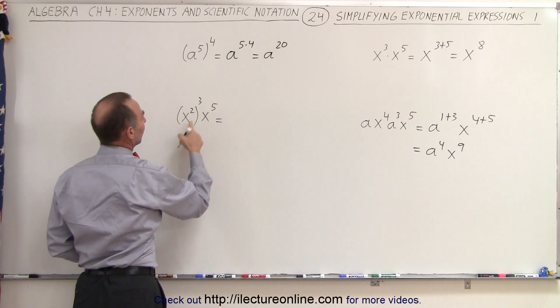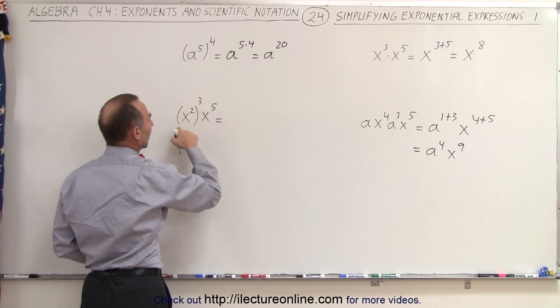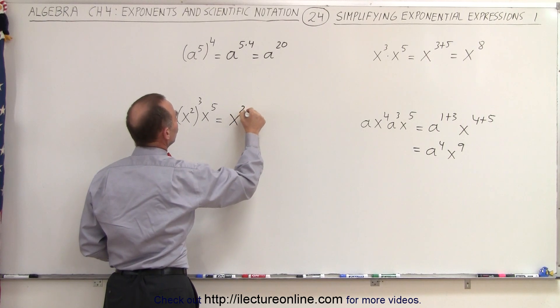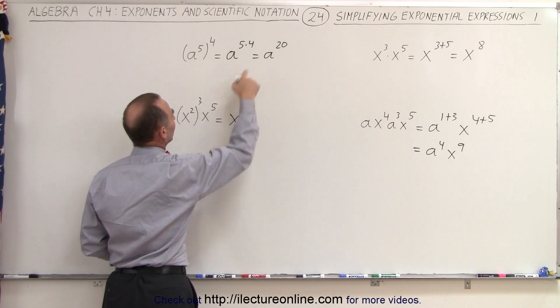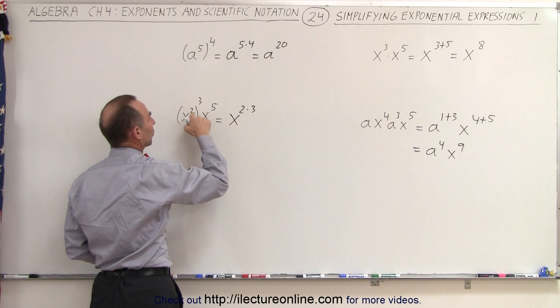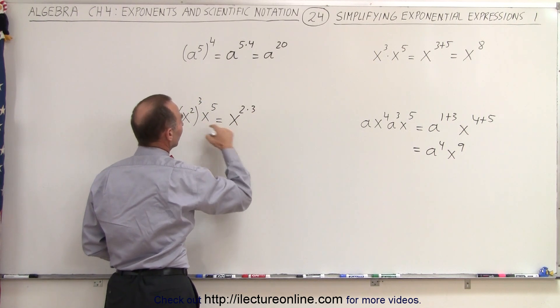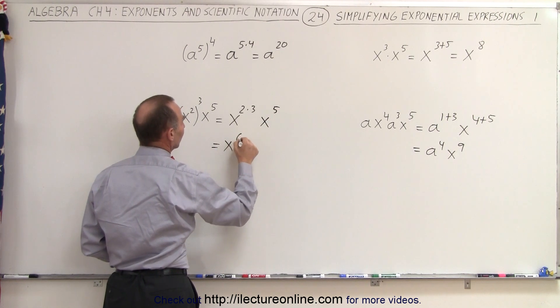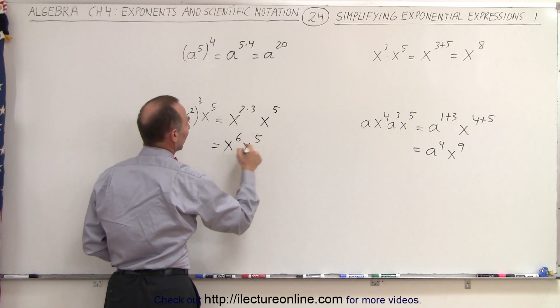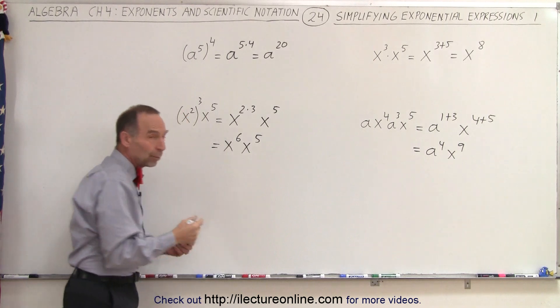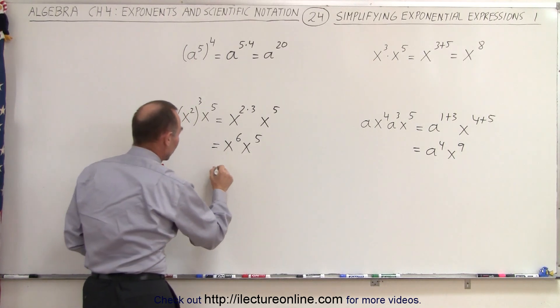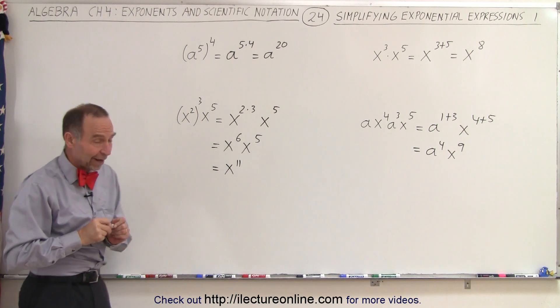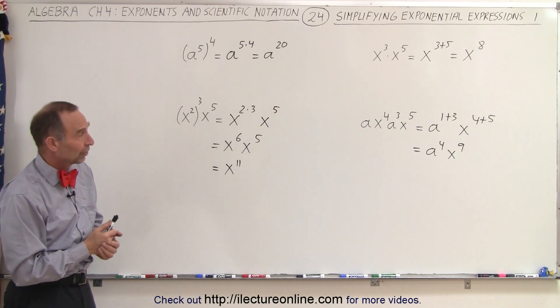And over here, we first take care of this portion right here and then we multiply them together. So this becomes x to the 2 times 3 power, because just like over here, when we raise an exponent to another exponent, we multiply exponents. We still write the x to the 5th power, so this becomes x to the 6th times x to the 5th. And now that the bases are the same, we simply add the exponents, so this becomes x to the 11th. And so that's how we simplify these types of exponential expressions.